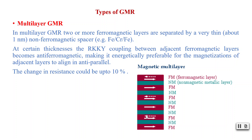We can use multiple layers — two or more, such as three, four, five, six, and so on. At certain thicknesses, the RKKY coupling between adjacent ferromagnetic layers becomes anti-ferromagnetic, making it energetically preferable for the magnetization of adjacent layers to align in anti-parallel.